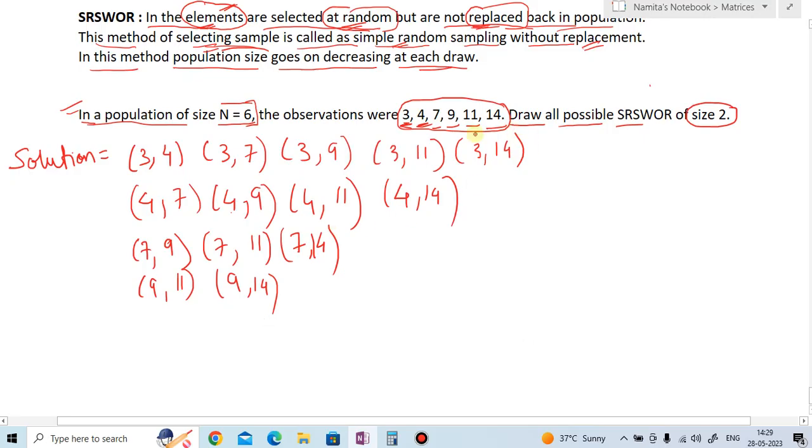Now next after 9 is 11. 11,14. So now after 14 there is no observation. So this is the simple random sampling without replacement.